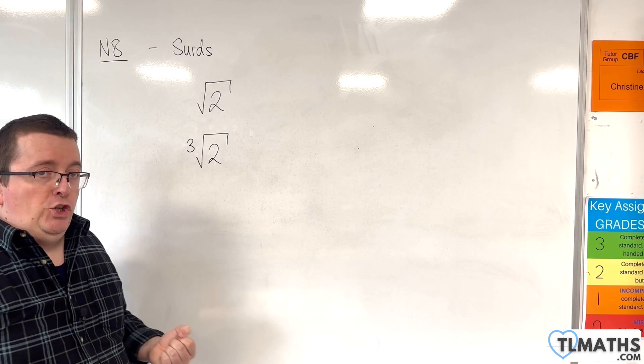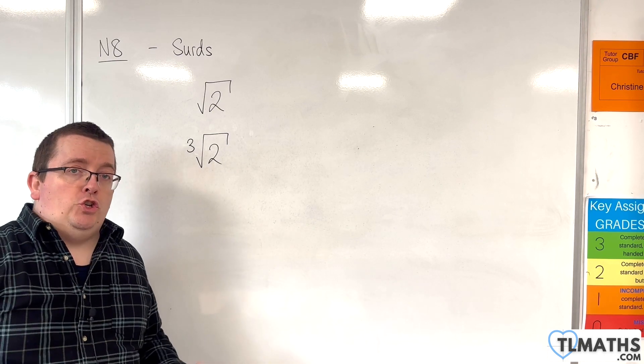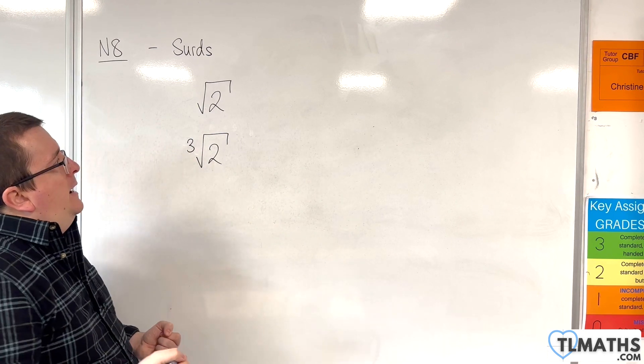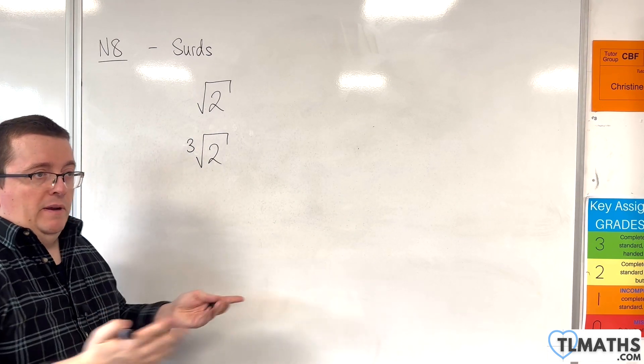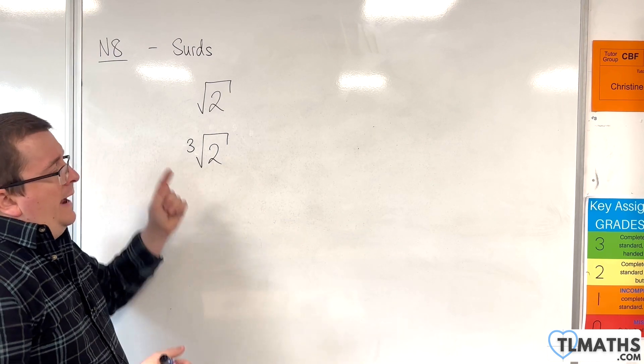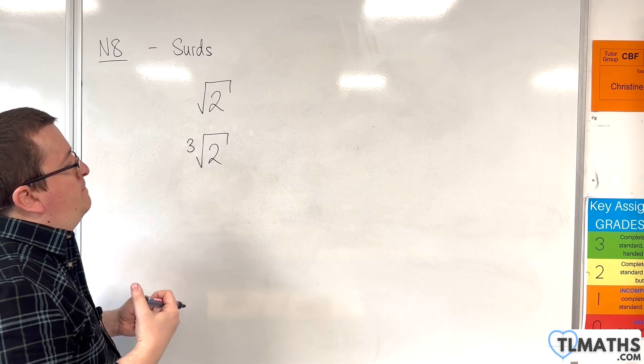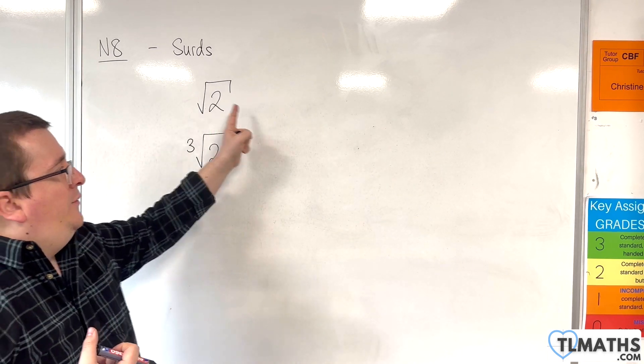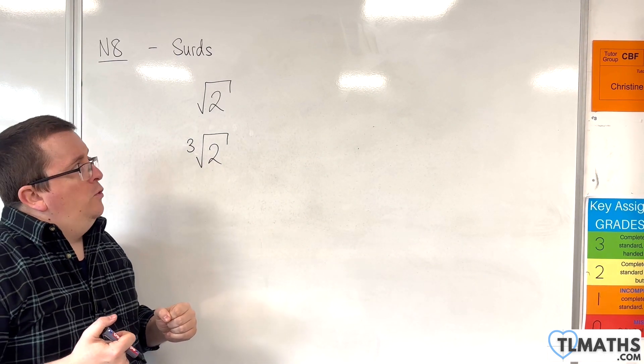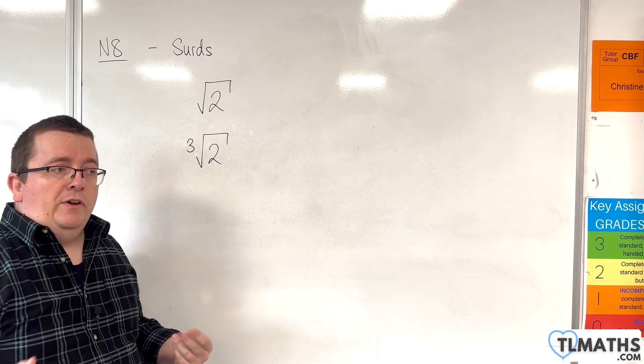They are irrational because I cannot write them as a fraction with one integer over another where the denominator is non-zero. If you wrote that into your calculator and you press equals, what you would have is a non-repeating set of digits. So they have that property alongside pi, for example.